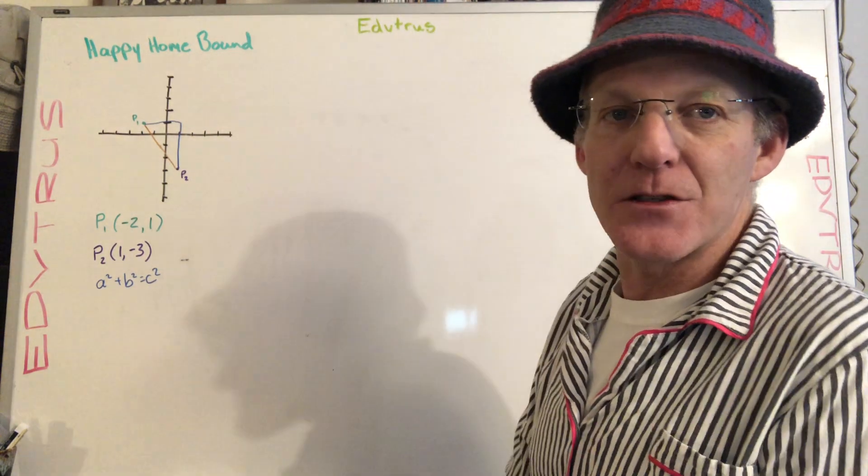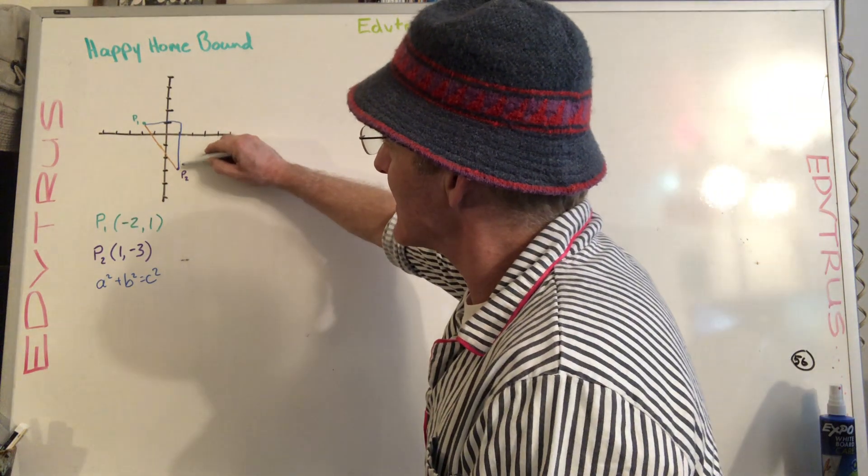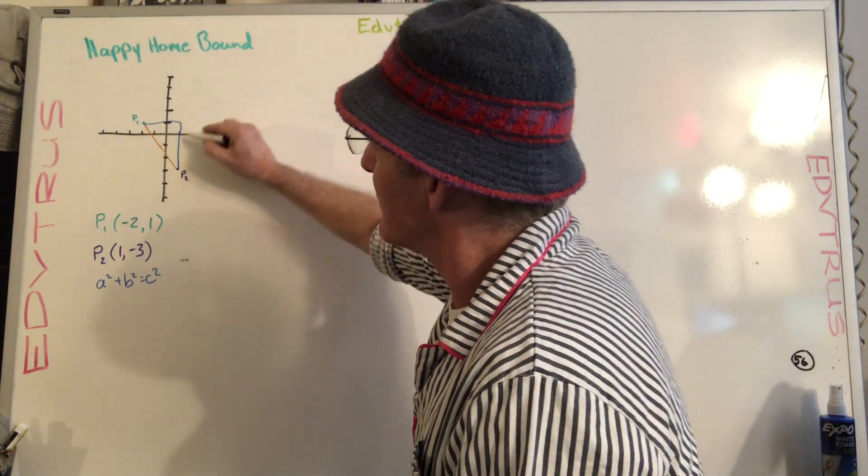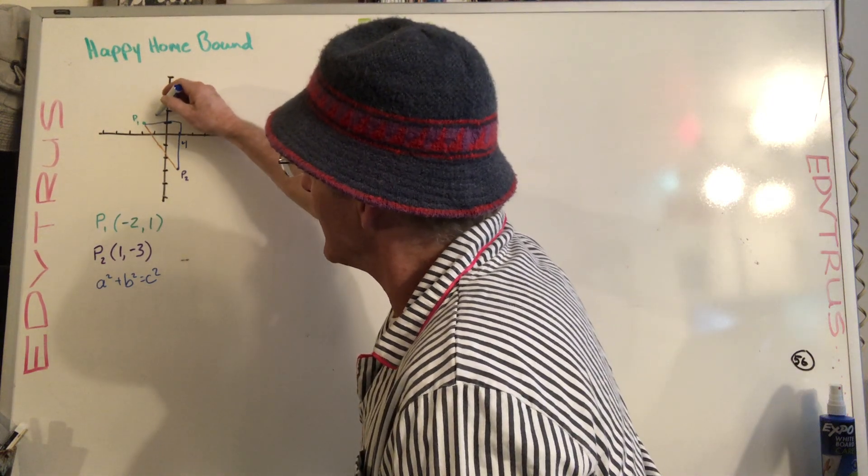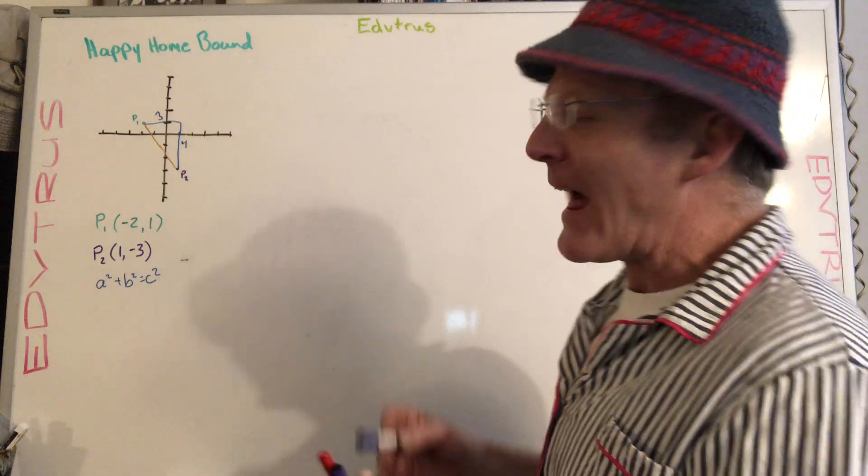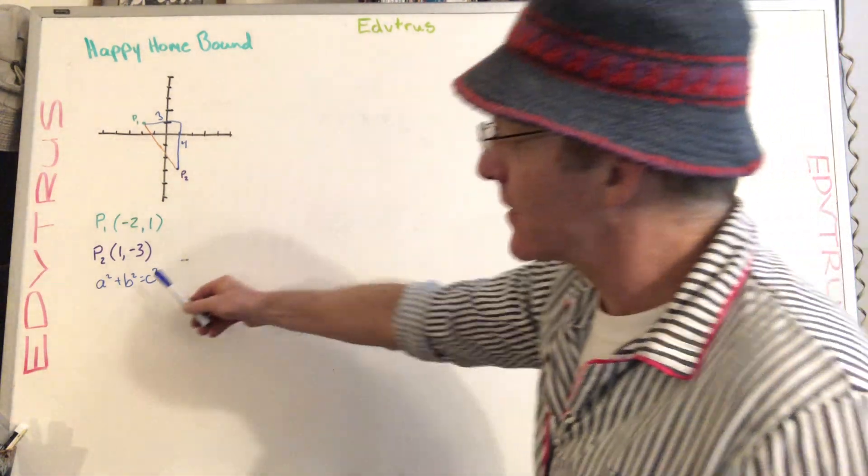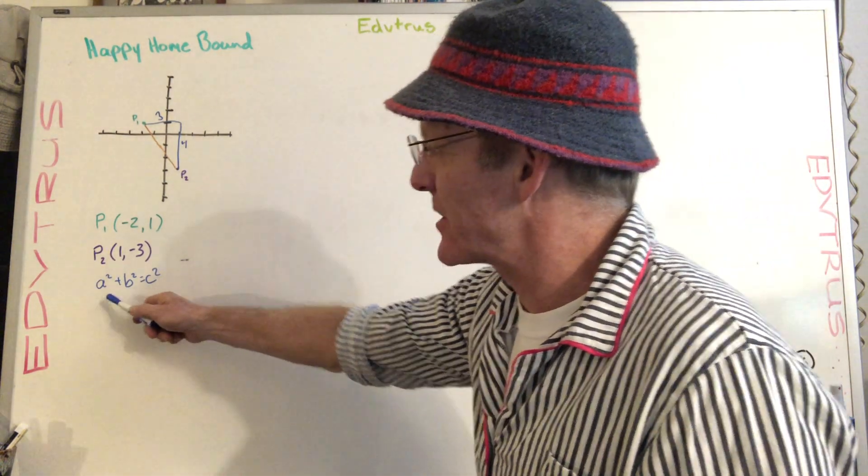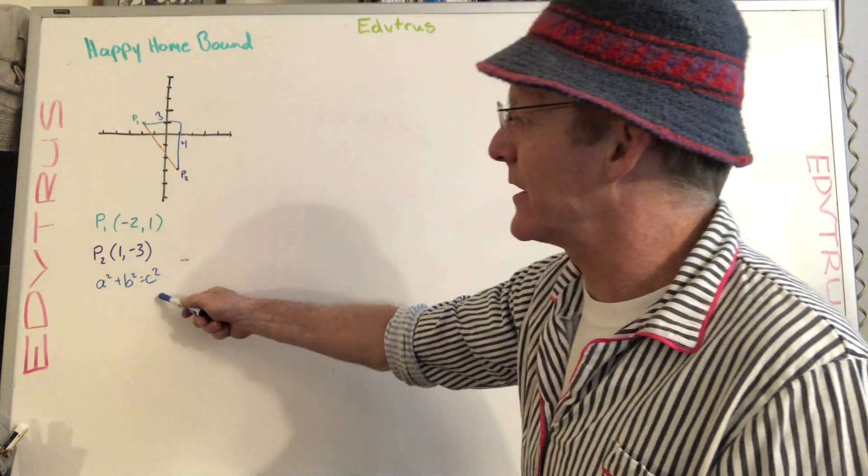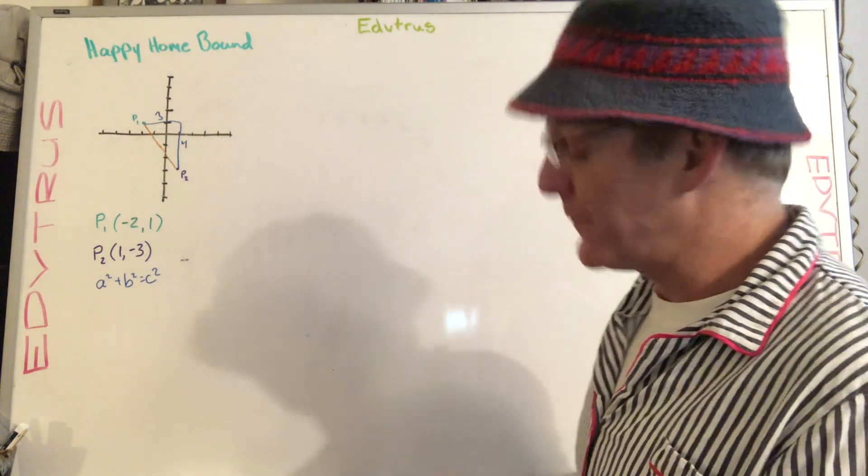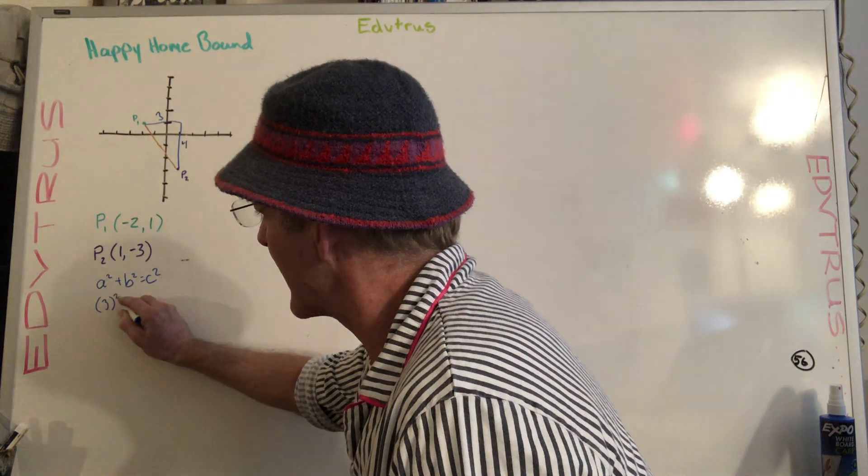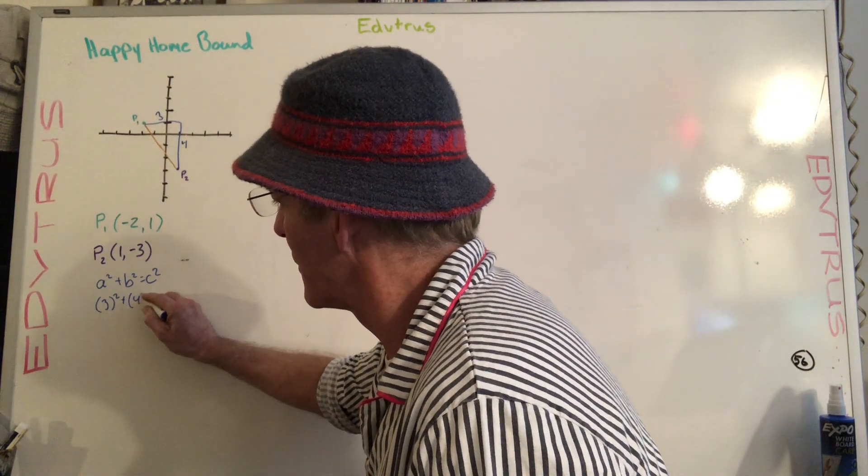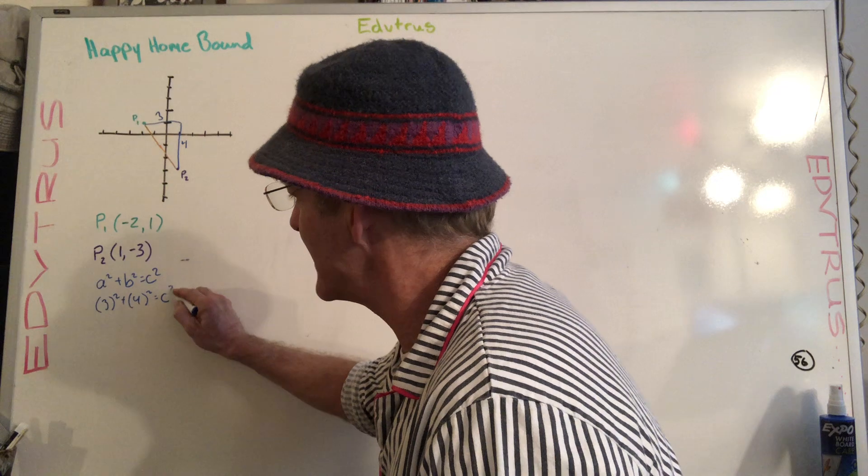So if we look at this right here, we can actually count for the two legs. We can see that this value is one, two, three, four units long, and this one is one, two, three units long. And so with that, we can do a Pythagorean theorem using this and just say three squared plus four squared equals C squared. Now, if we did that, let's go ahead and say that three squared plus four squared equals C squared.